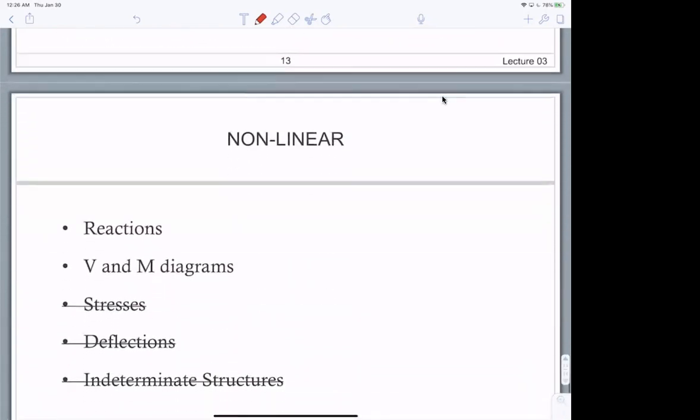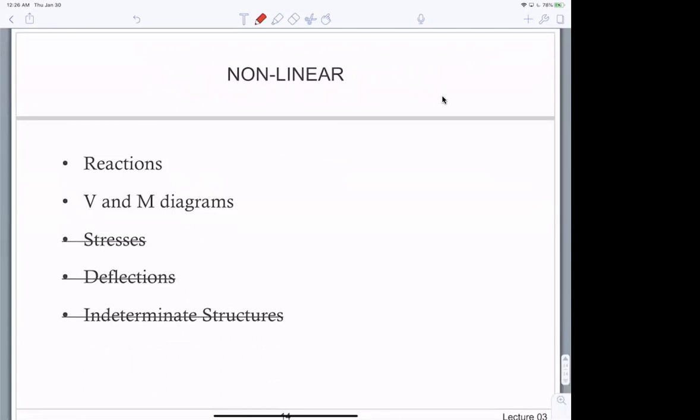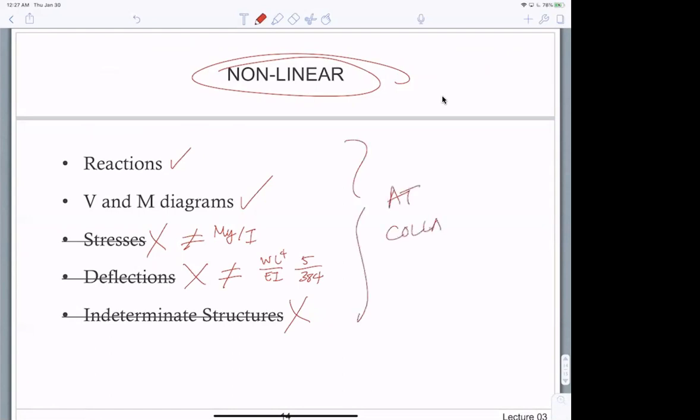But remember, we're talking about the behavior right before concrete breaks, and so it's non-linear. This is true: statics, shear and moment diagrams are true. These things you've learned are all non-applicable anymore. So it's a little bit crazy. You cannot use M Y over I. You cannot use W L to the fourth over E I, 5 over 384. And you can't, if you've taken 4200, you can't use any of that stuff. This is at collapse. A lot of the papers I'm working on here address all these issues, and we're getting deflections, we're getting stresses, we're getting forces in indeterminate structures using advanced techniques.